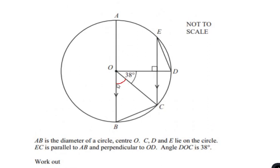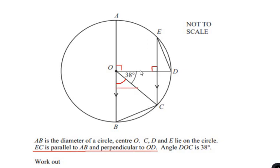To start with, we can see that they have given a hint here saying that EC is parallel to AB and perpendicular to OD, which means the line EC is going to make 90 degrees with the line OD. And since EC is parallel to line AB, the line AB is also going to make 90 degrees with the radius OD. So angle AOD is 90 degrees.